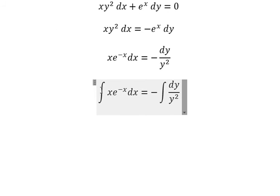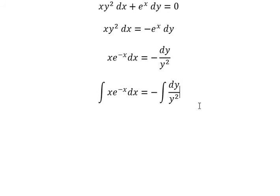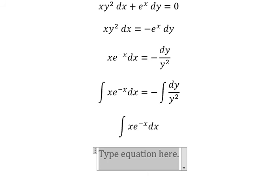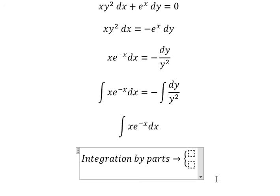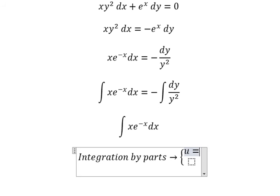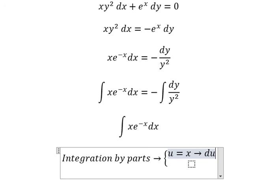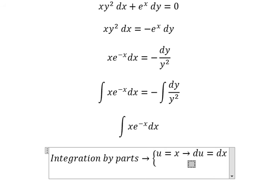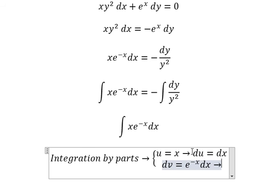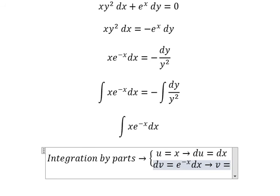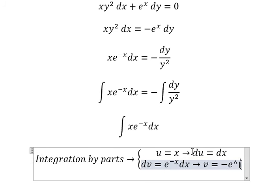Next we need to find the integral of this one, so we use integration by parts. We let u equals s, du equals ds, and dv equals e to the power of negative s ds. So we get v equal to negative e to the power of negative s.